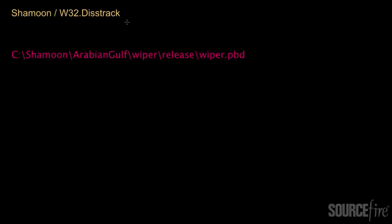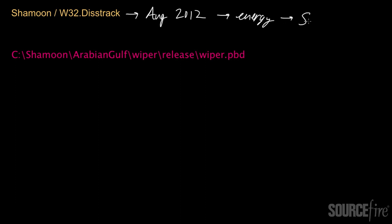The Shamoon malware, which is also known as W32.distrack, was actually discovered in August of 2012. It was seen to be targeting specific companies in the energy sector. One particular company targeted by Shamoon is Saudi Aramco, who reported that about 30,000 of their PCs were infected with this particular threat.